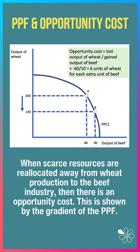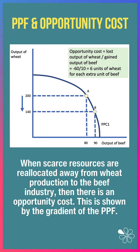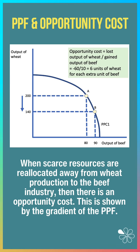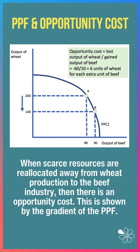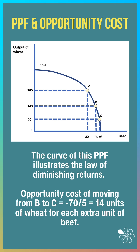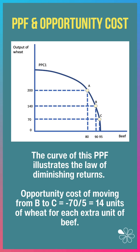Here's a PPF showing output of wheat and beef. It's a bow-shaped PPF, so when scarce resources are reallocated away from wheat towards the beef industry, there is an opportunity cost shown by the gradient of the PPF. The curve of this diagram shows the law of diminishing returns.